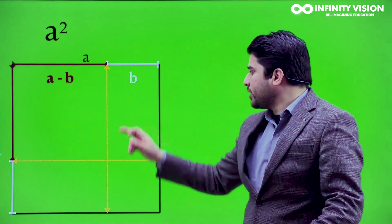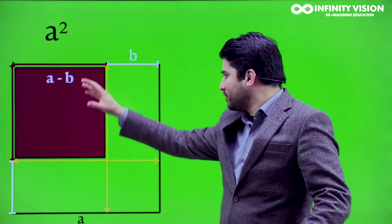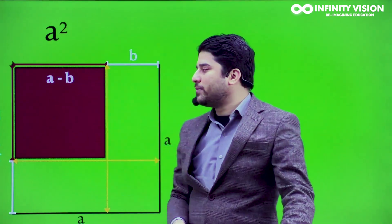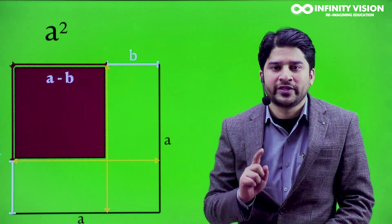Now let's look into the first region. As you can see, the side is going to be (a minus b) and (a minus b), which is nothing but a square of dimension (a minus b) by (a minus b). If I ask you what is the area of this red region, you're going to say it's going to be (a minus b) multiplied with (a minus b), that is (a minus b) whole square.